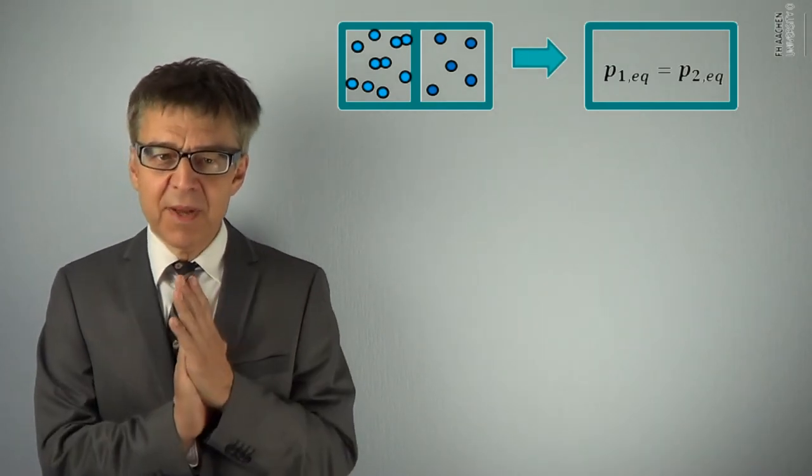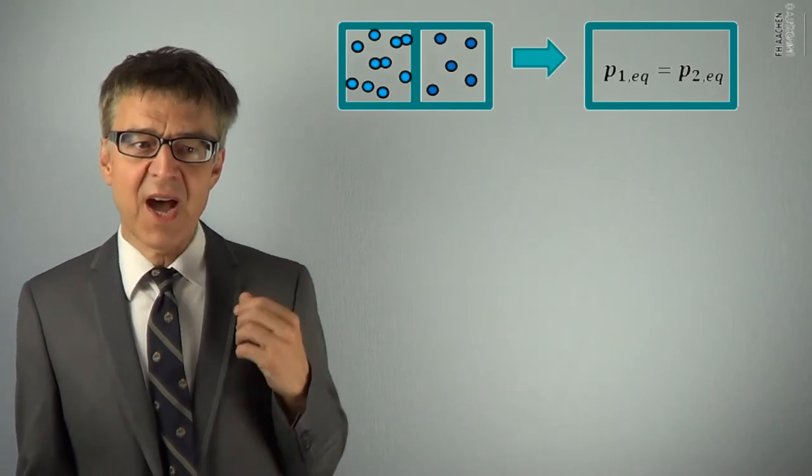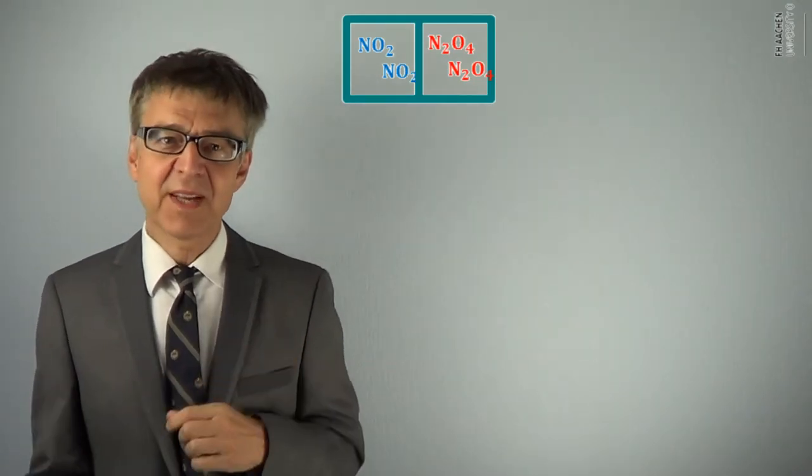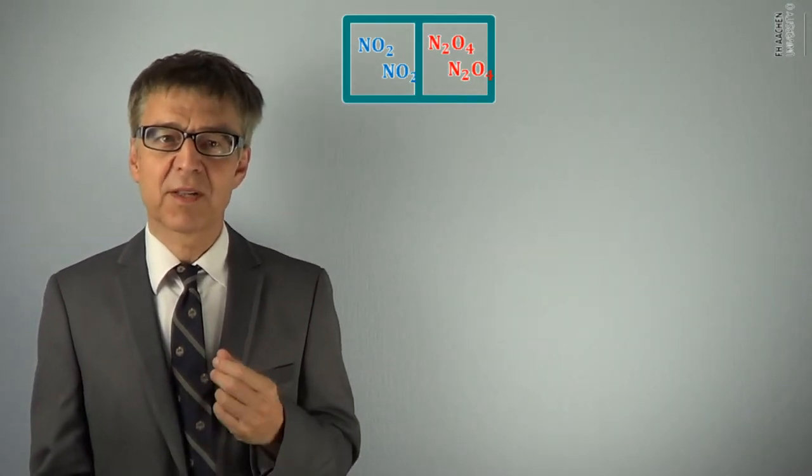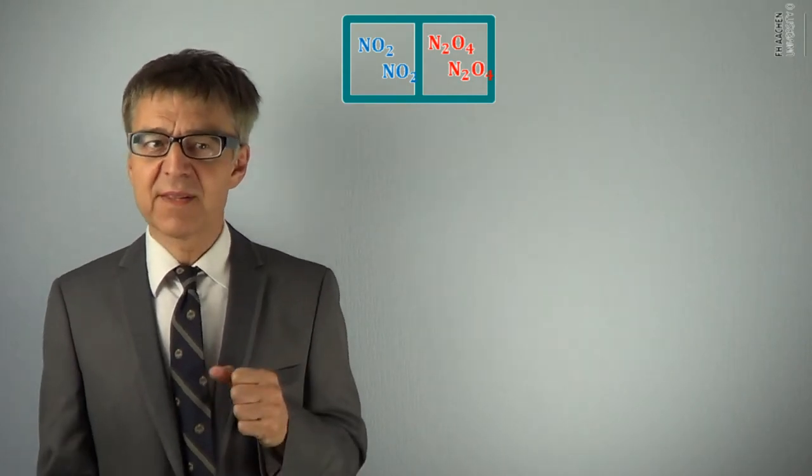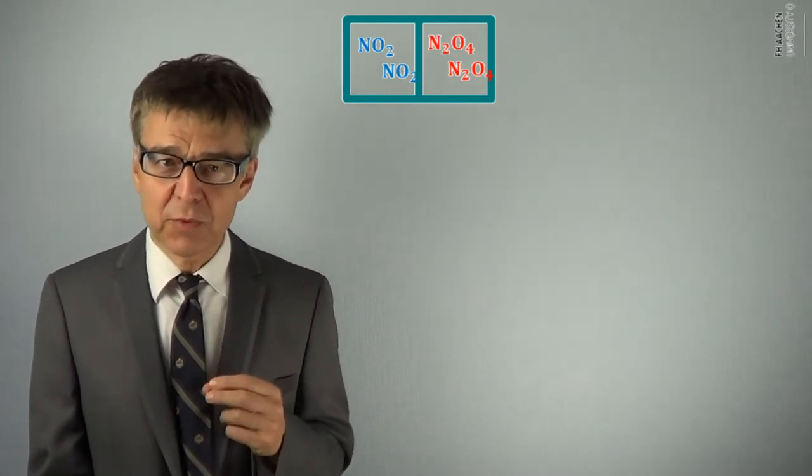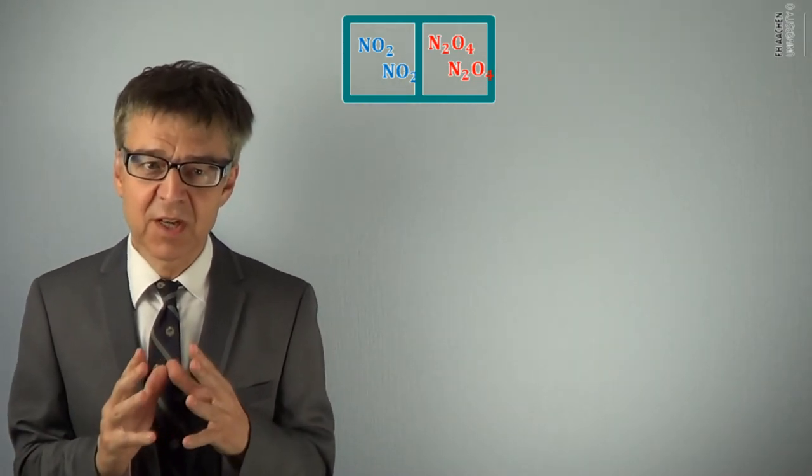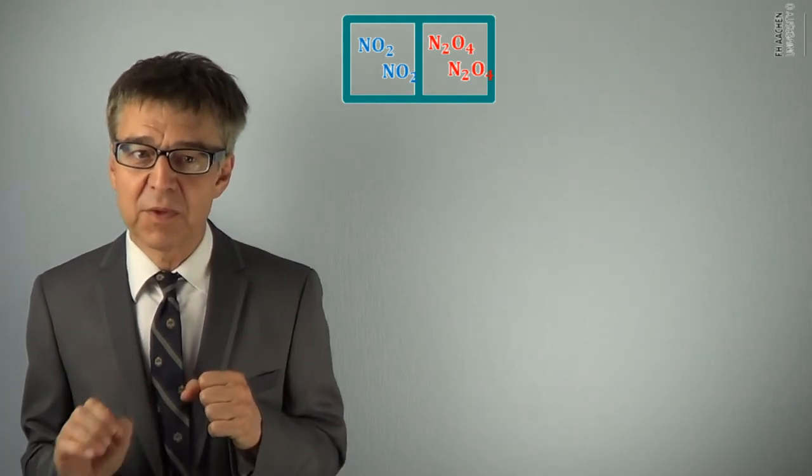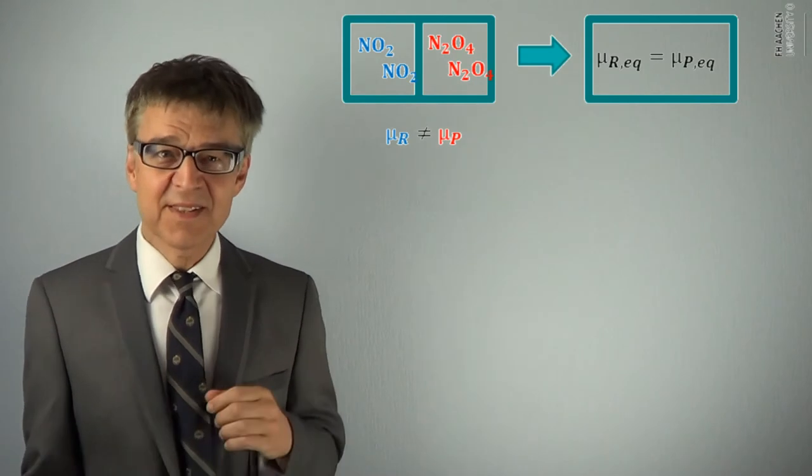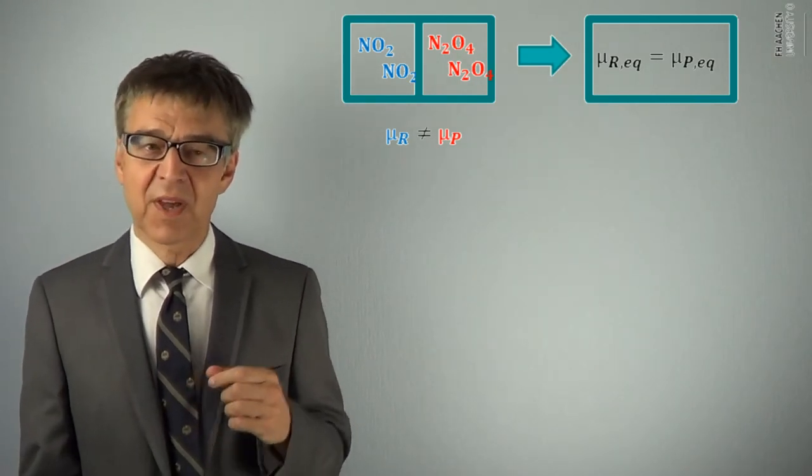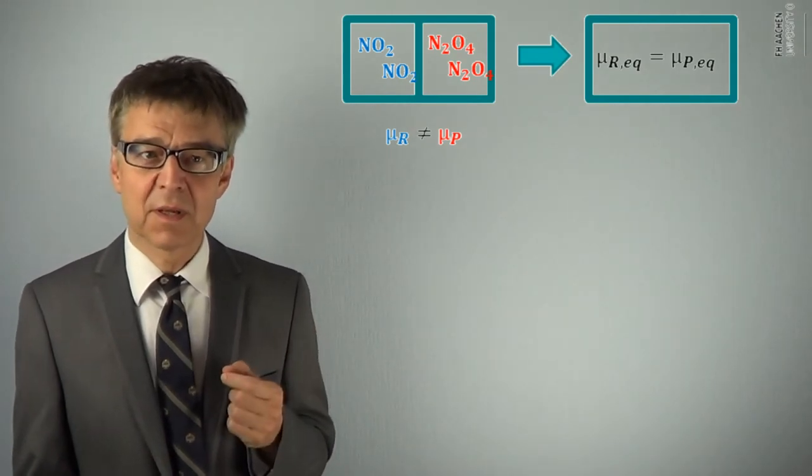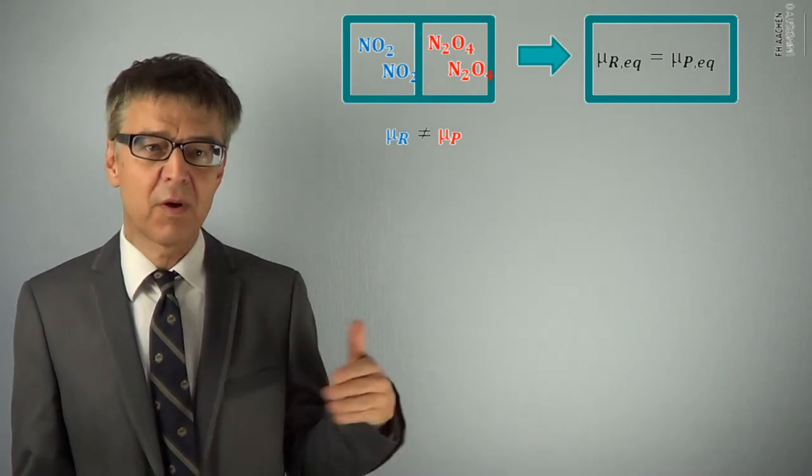In thermodynamics, it is possible to figure out chemical equilibrium in a similar way. Consider a reactant NO2 and the product N2O4. Thermodynamics defines a state variable, the chemical potential mu, which allows for a statement on the distance of the reaction mixture from chemical equilibrium. If reactants and products are not in equilibrium, the chemical potentials of the reactant and the product will be different. There may be a reaction in one or the other way.